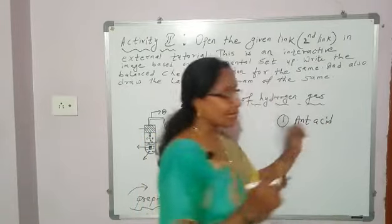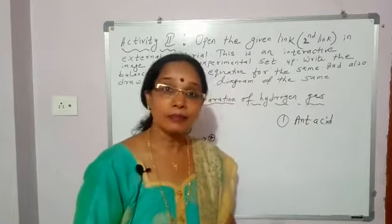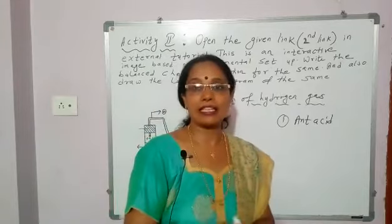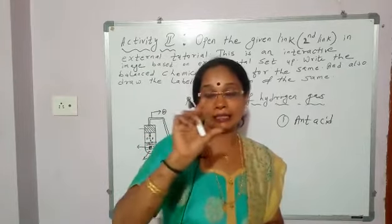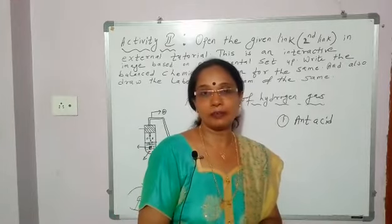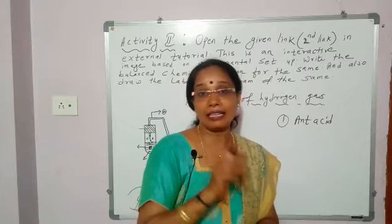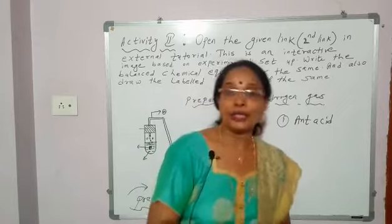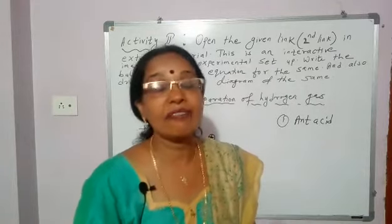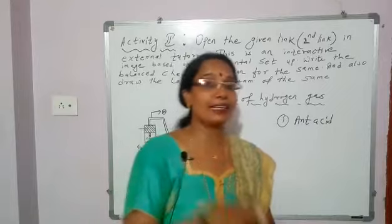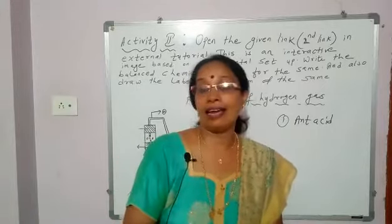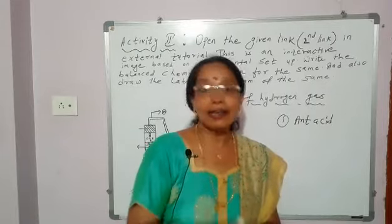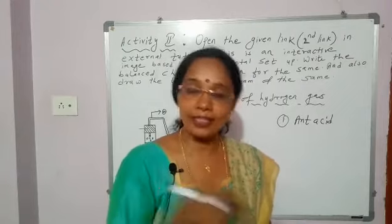Antacid contains a base, an alkali — like milk of magnesia. Its main chemical is magnesium hydroxide, which is a base, which is an alkali, which will neutralize the excess acid and you will get relief. Or you can take Eno to get relief from acidity. Eno contains sodium bicarbonate, NaHCO₃, which is a base, an alkali, so it will neutralize the excess acid in the stomach and you will get relief.